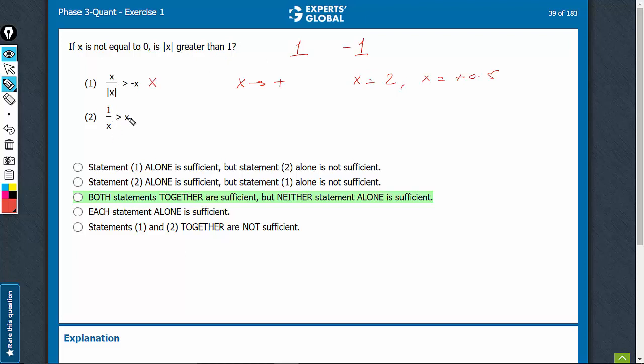Statement 2: 1/x > x. This is possible in two conditions. When x is a small fraction, such as x equals 0.2, or when x is a big negative number, such as x equals minus 2. Imagine, 1 over minus 2 will be negative 0.5, which will be greater than negative 2.